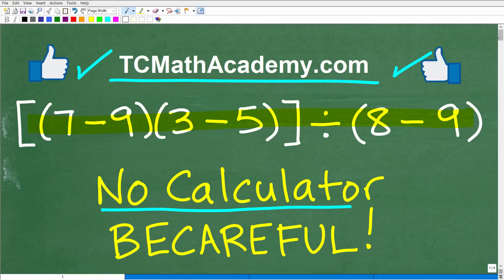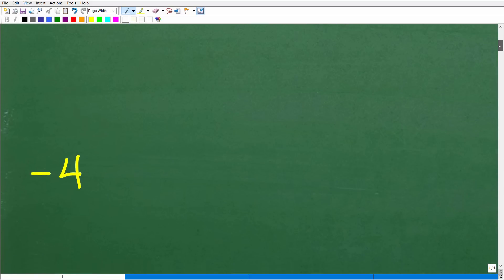So let's go ahead and take a look at the answer. We have bracket, parentheses, 7 minus 9, end parentheses, parentheses, 3 minus 5, end parentheses, end bracket, divided by parentheses, 8 minus 9, end parentheses. So what is the answer? The answer is negative 4.